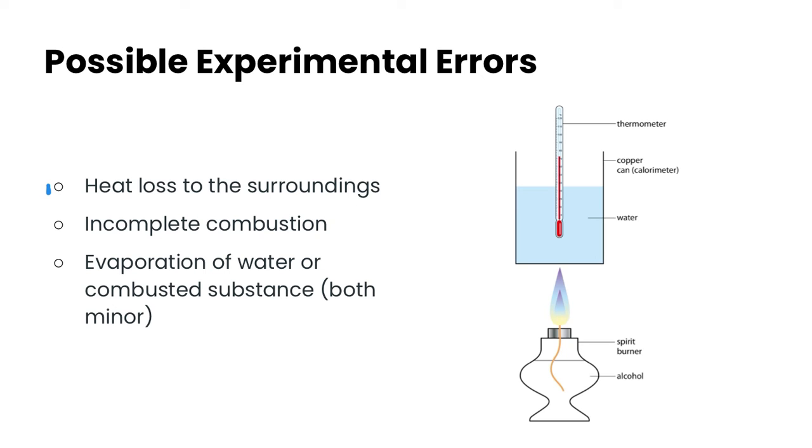The first is that there's definitely heat loss to the surroundings. So you're heating up the alcohol here and heating up the water. But the heat can be lost to the surrounding air itself. Or it could also be lost to heating up the calorimeter itself.